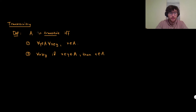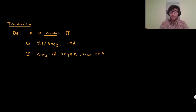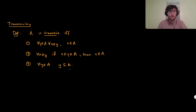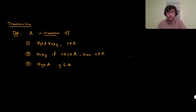Expressing this in the second condition hopefully makes clear why we're using the term 'transitive': if x is an element of y and y is an element of A, we're thinking about the membership relation epsilon as a transitive relation. The third equivalent definition would be: for every y in A, y is actually a subset of A — meaning every element of y is an element of A.